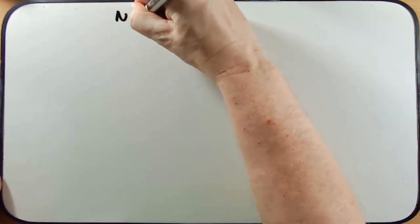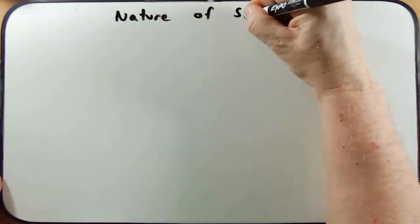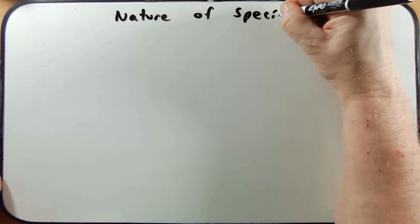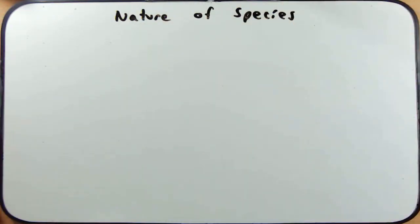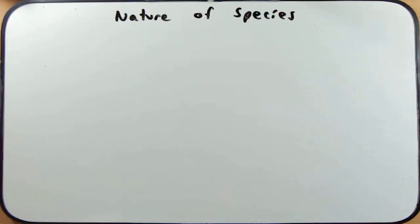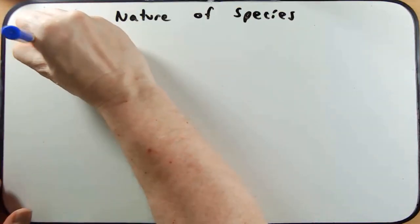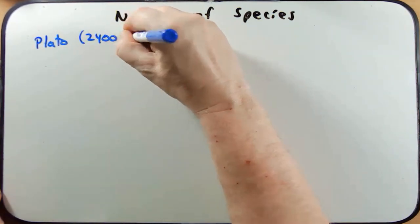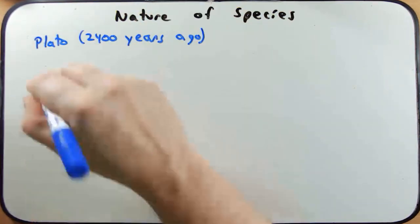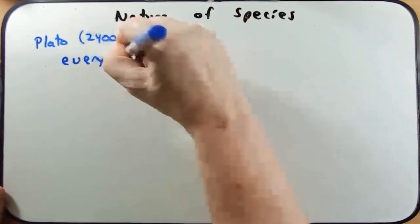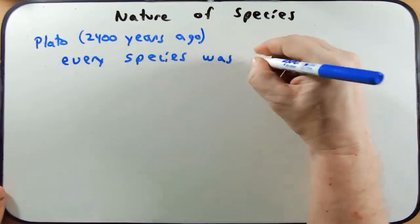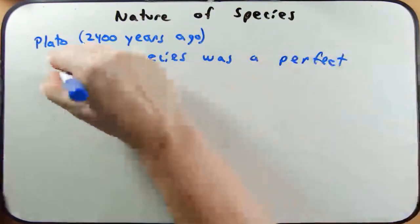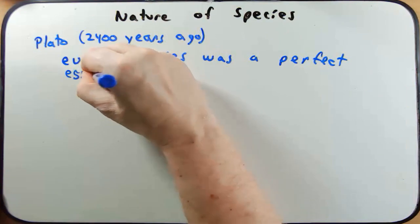We're going to talk about Darwin and Wallace, but to get there, let's talk about the nature of species — what did previous people before Darwin and Wallace think about the nature of species? We'll start with Plato, about 2,400 years ago. He believed that every species was a perfect essence of themselves.